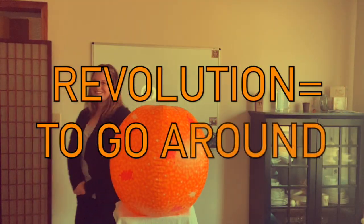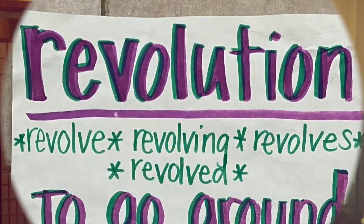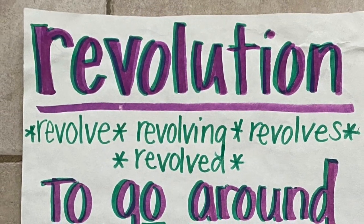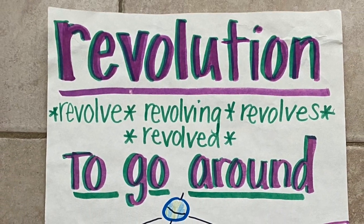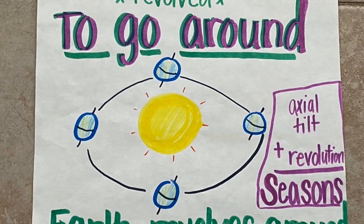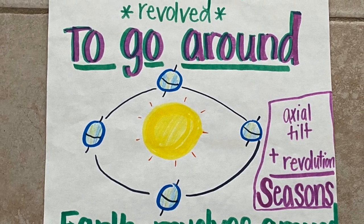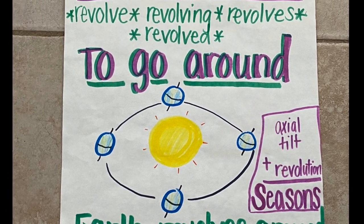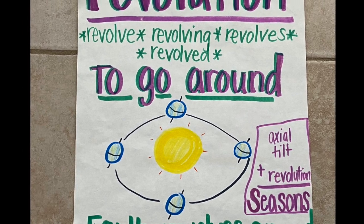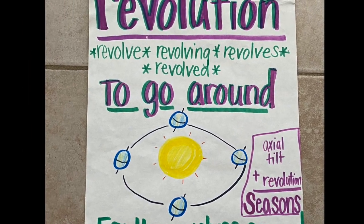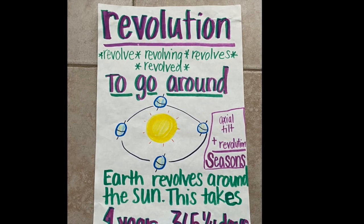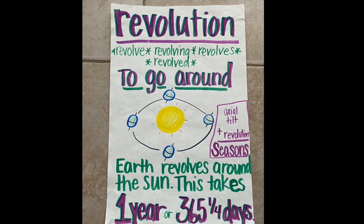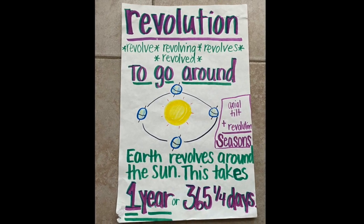A revolution means to go around. Other versions of the word are revolve, revolving, revolves — they all mean the same thing: to go around. Earth revolves around the sun, and that along with the axial tilt is what causes seasons here on Earth. The biggest thing you need to know about revolution is that it means to go around. How long does it take Earth to revolve around the sun? It takes one year, or 365 and one-fourth days. That's one revolution.